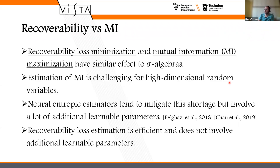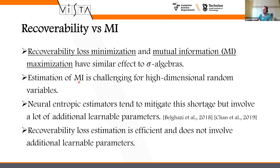Recoverability loss minimization and mutual information maximization are similar from the sigma algebra perspective. However, estimating mutual information is challenging for high-dimensional random variables — neural entropic estimators add many learnable parameters and are inconvenient. By contrast, recoverability loss estimation is efficient and does not involve additional learnable parameters.